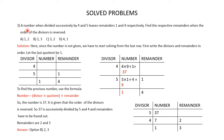Question 3: A number when divided successively by 4 and 5 leaves remainders 1 and 4 respectively. Find the respective remainders when the order of the divisors is reversed. You are given 4 answer options. Since the number is not given, we have to start solving from the last row. First, write the divisors and remainders in order. Let the last quotient be 1.